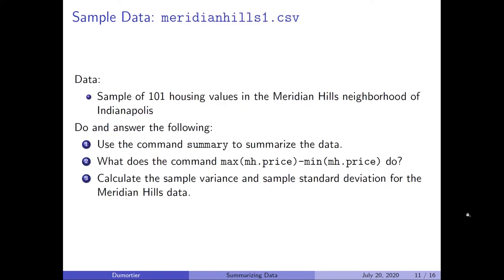Let us apply these concepts to a sample of 101 home values in the Meridian Hills neighborhood of Indianapolis. We will use the summary command to summarize the data, calculate the range, and calculate the sample variance and sample standard deviation. The 101 home values are only a sample — not the entire population of homes in Meridian Hills — so we calculate sample statistics.